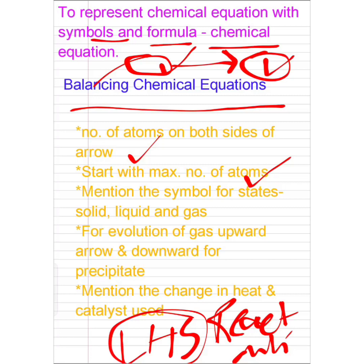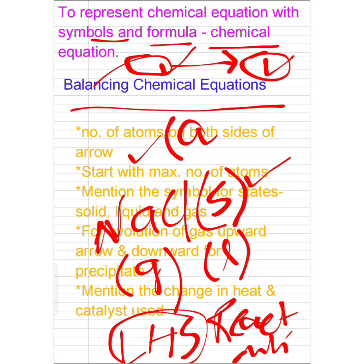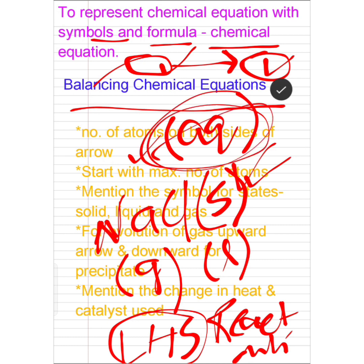Third point: mention the symbol for solid, liquid, and gas state. For example, sodium chloride NaCl — if we are adding it into water, we are adding solid NaCl, so in brackets we write S for solid, L for liquid, G for gas. Another symbol is aqueous. When we dissolve any substance — solid, liquid, or gaseous — into water and it dissolves, it forms an aqueous solution. So when NaCl is dissolved in water, we call it an aqueous solution of NaCl.